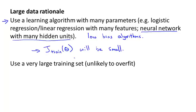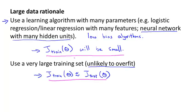Now, let's say we use a massive, massive training set. In that case, if we have a huge training set, then hopefully, even though we have a lot of parameters, but if the training set is sort of even much larger than the number of parameters, then hopefully these algorithms will be unlikely to overfit. Because we have such a massive training set. And by unlikely to overfit, what that means is that the training error will hopefully be close to the test error. Finally, putting these two together, if the training set error is small and the test set error is close to the training error, what these two together imply is that hopefully the test set error will also be small.